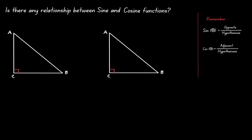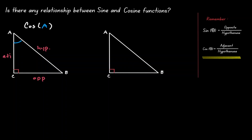Let's choose a reference angle for the triangle on the left — let's choose angle A — and consider the cosine of angle A. Let's label our triangle properly. The side opposite to 90 degrees is the hypotenuse. The side opposite to our reference angle is the opposite side, and the side next to the angle is the adjacent. Since cosine is defined as adjacent over hypotenuse, we can define the cosine of angle A as AC over AB.